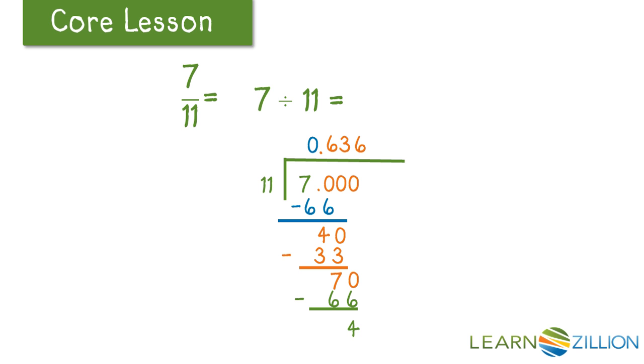And so we're going to get zero point six three six three for our answer. Seven divided by eleven is equal to zero point six three six three six three repeating. Seven elevenths is the decimal point six three repeating.